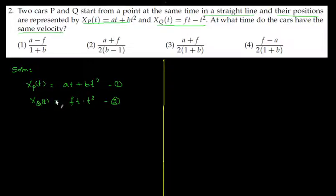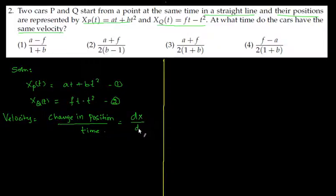These two equations give the position and we know that velocity is change in position by time, that is you can say dx/dt. So we can now differentiate these two equations and get the velocity.